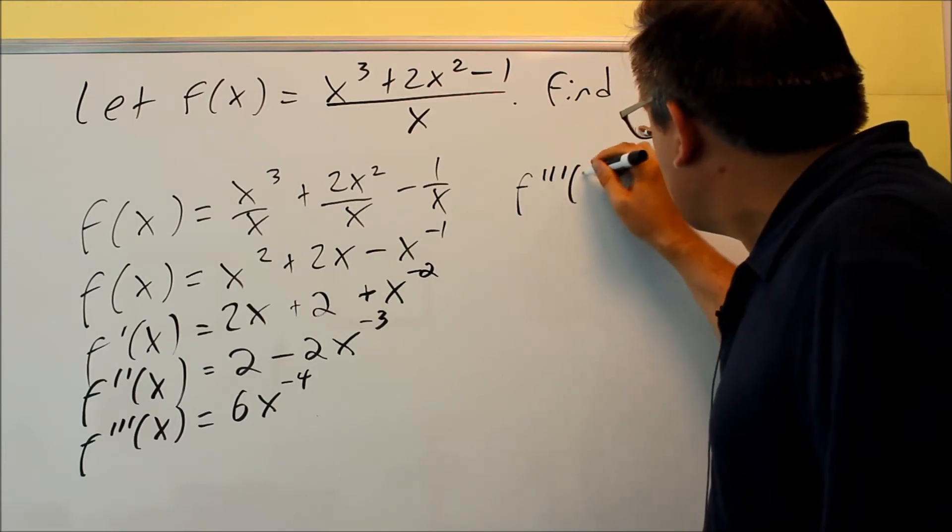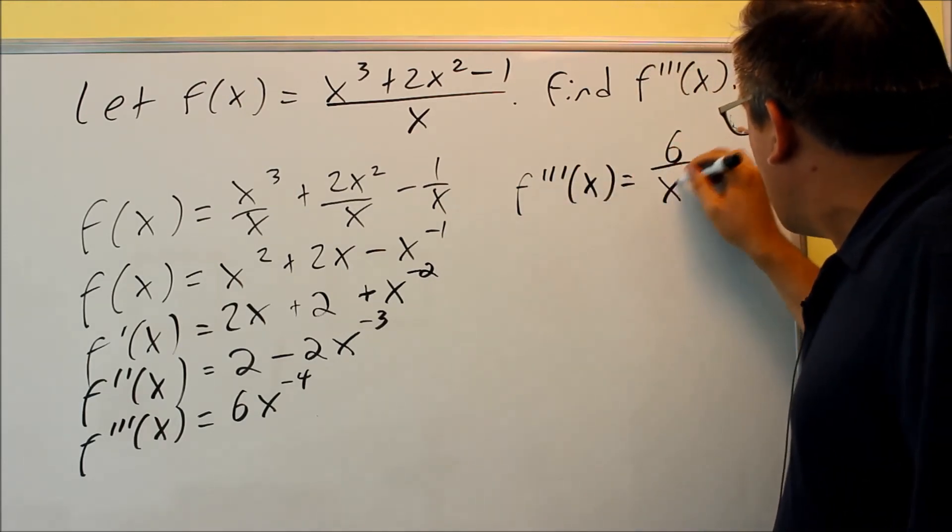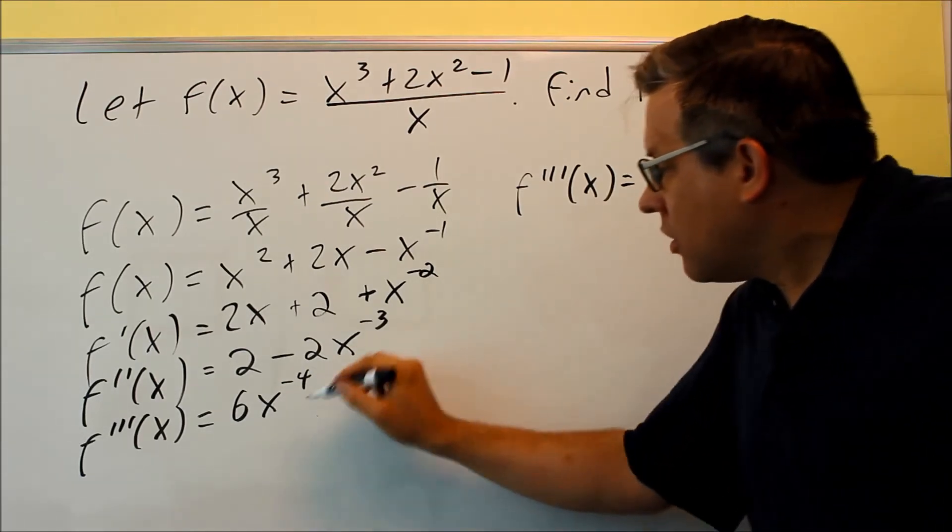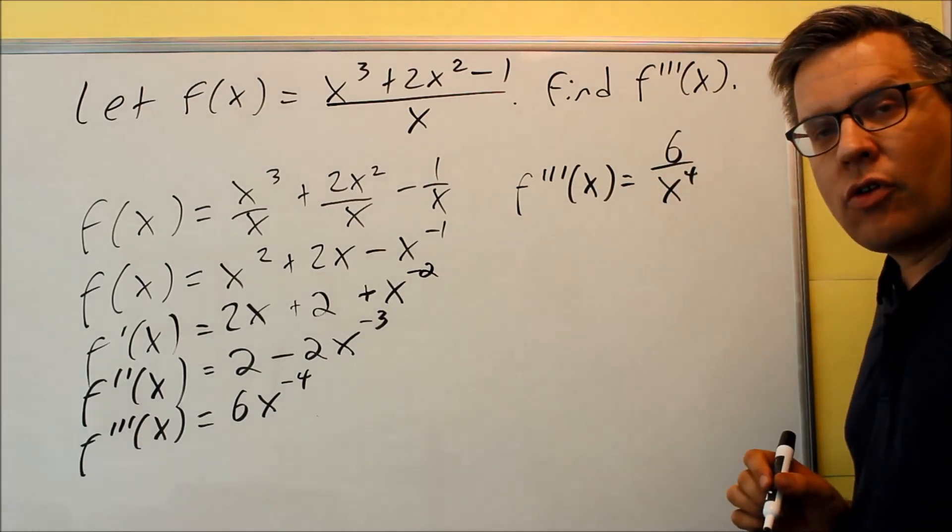So, the final answer, the third derivative is going to be, we can write it as 6 over x to the fourth. Since we're writing our answer now, it's okay to take it out of that negative exponent form and we'll write it as this. So the answer is 6 over x to the fourth.